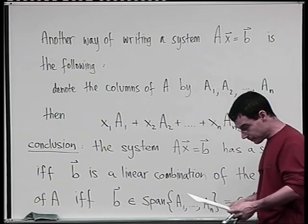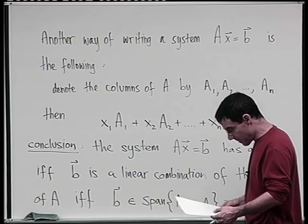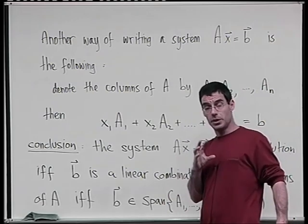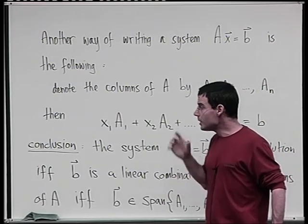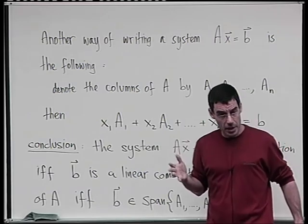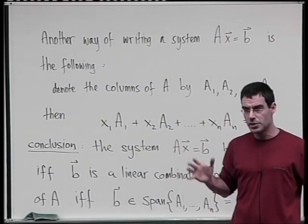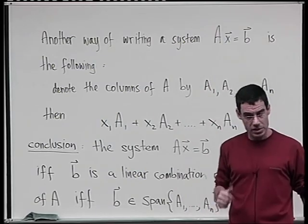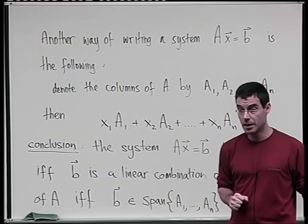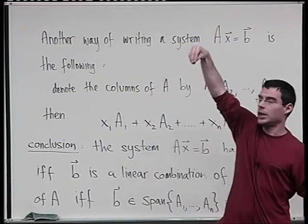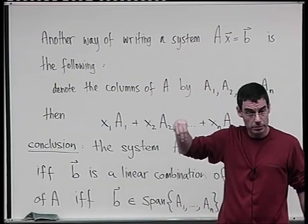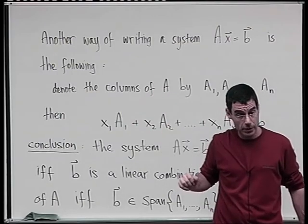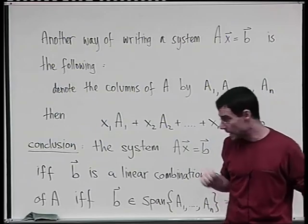We now know the notions of linear combination and span. What I want to do next, by means of a couple of examples, is show how: given a subspace W defined as the span of some elements, and an element in V, we decide whether it belongs to W — i.e., whether it can be written as a linear combination of the given U i's.